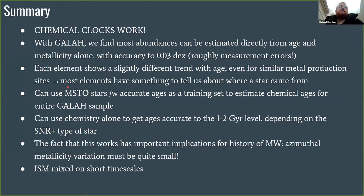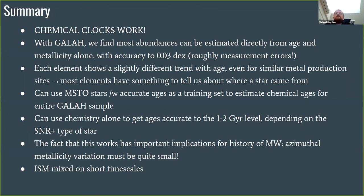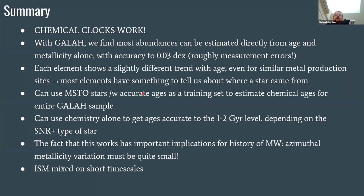In summary, chemical clocks work — we were able to generalize this method to get ages for the entire GALAH dataset. Abundances can be estimated directly from age and metallicity alone to an accuracy of about 0.03 dex. This is a way forward: if you want to study kinematics sliced by age, you can now use the entire samples of these surveys, provided you measure abundances for enough elements.